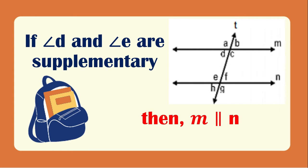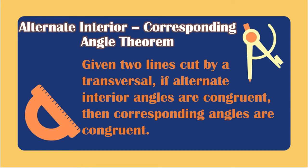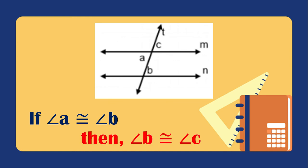Since the same side interior angles are supplementary, the conclusion is line M is parallel to line N. The alternate interior corresponding angle theorem states: given two lines cut by a transversal, if alternate interior angles are congruent, then corresponding angles are congruent. In this figure, angle A is congruent to angle B since they are alternate interior angles, so angle B is congruent to angle C since they are corresponding angles.